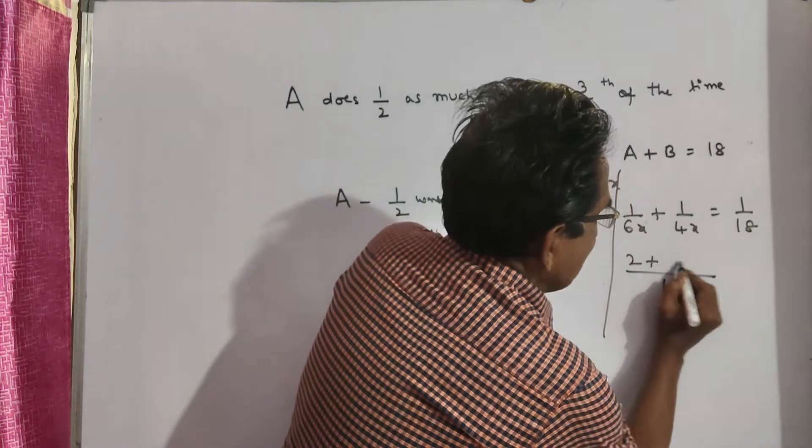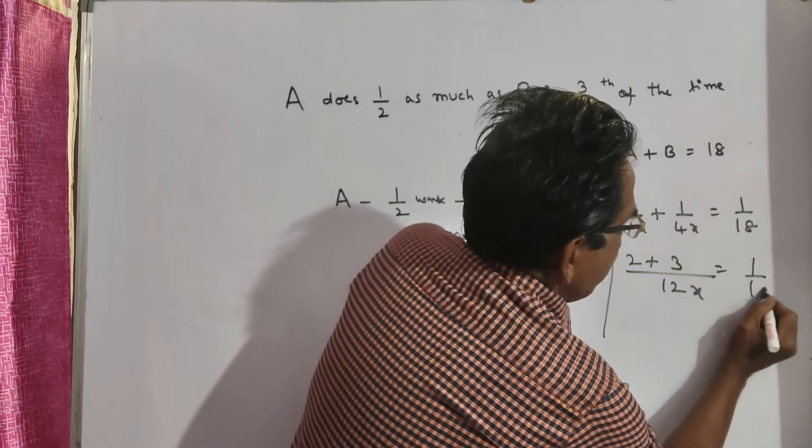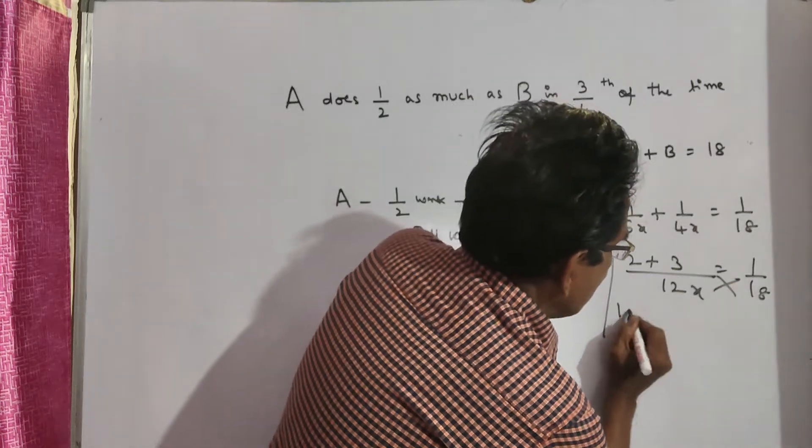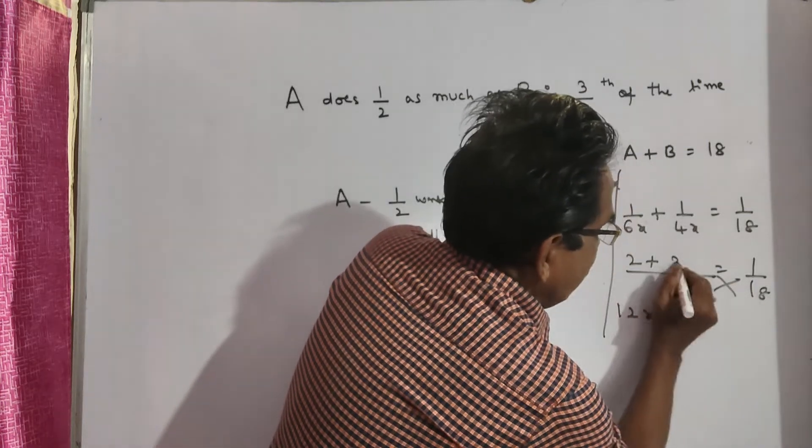LCM 12x, 2 plus 3. 12x is equal to 2 plus 3, 5 into 18, 90.